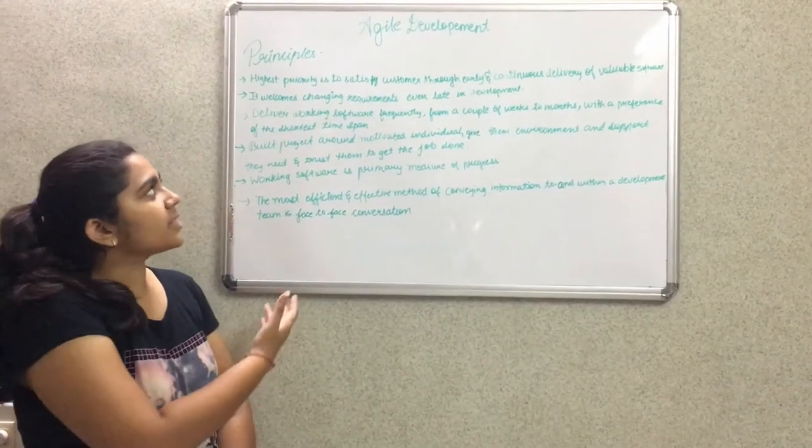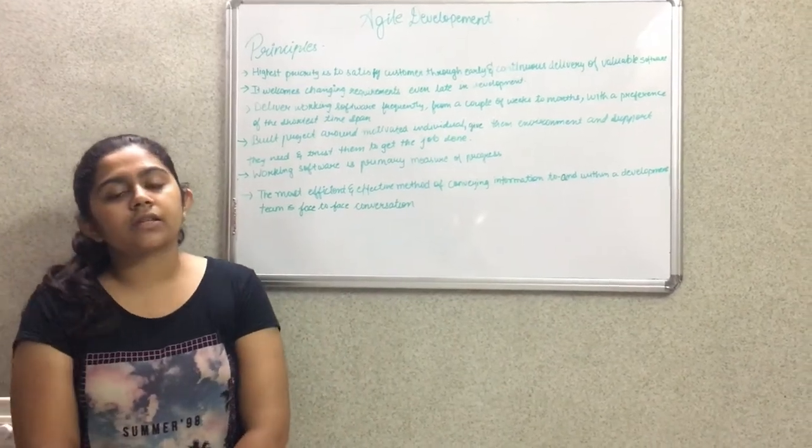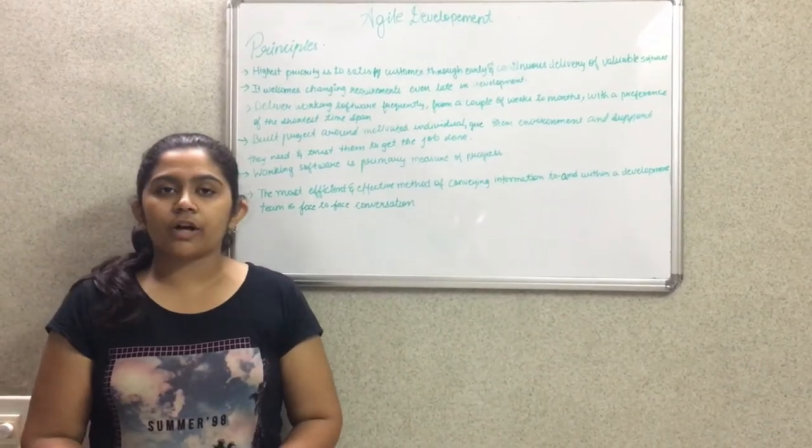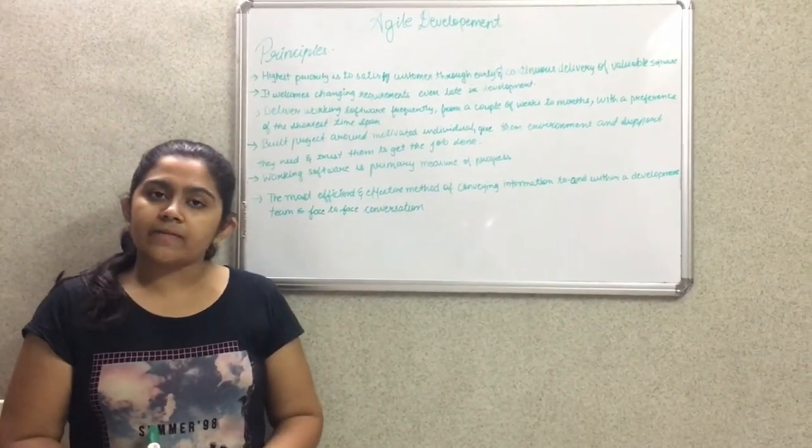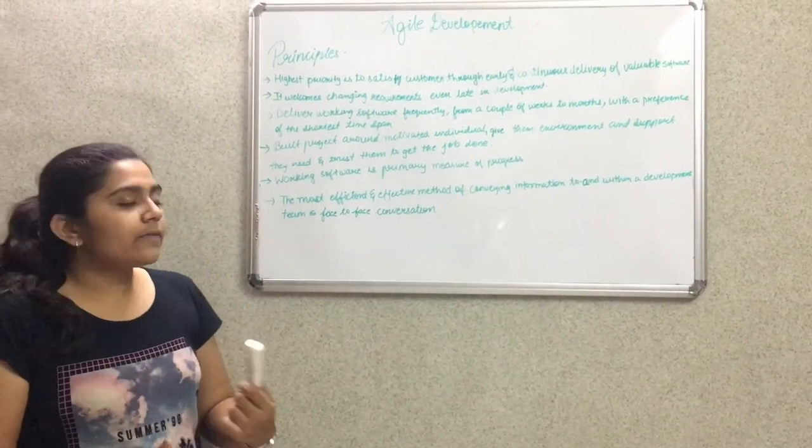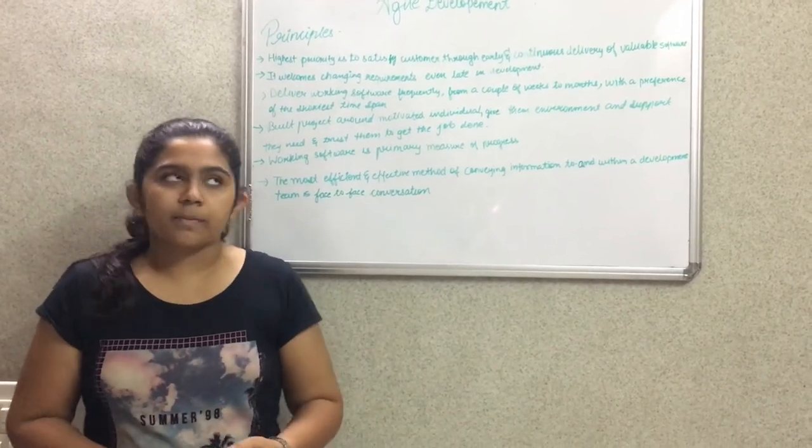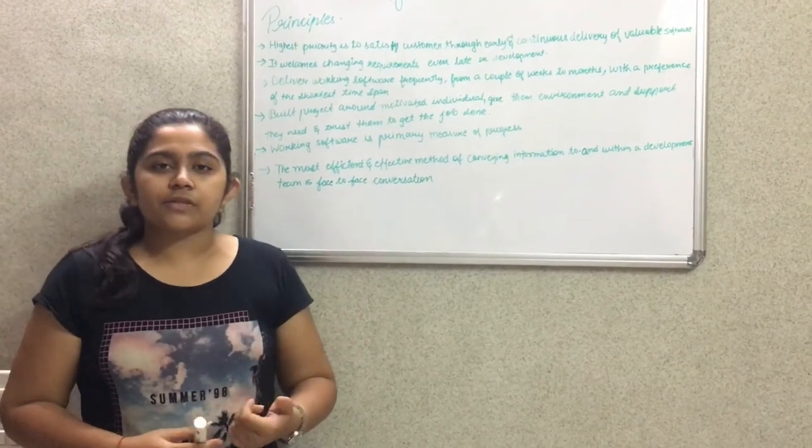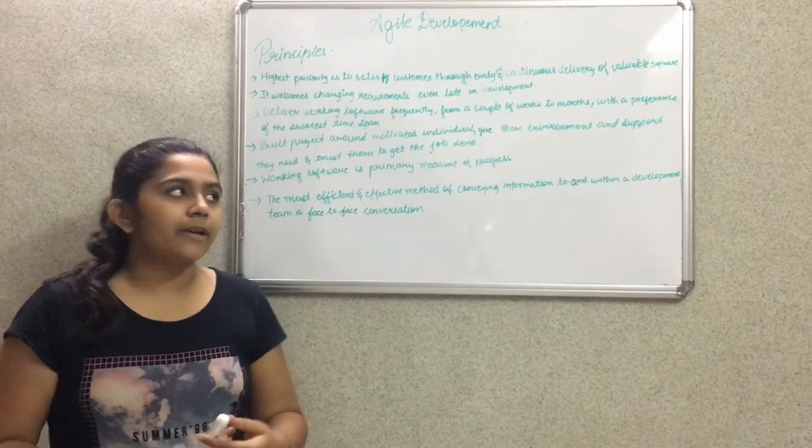Now let's see some principles of Agile development. First, highest priority is to satisfy customer through early and continuous delivery of the software. Second, it welcomes changing requirements even late in the development phase. Third, deliver working software frequently in couple of weeks or months with preference for shortest time span. Fourth, build projects around motivated individuals, give them the environment they need and trust them for the work they have done.